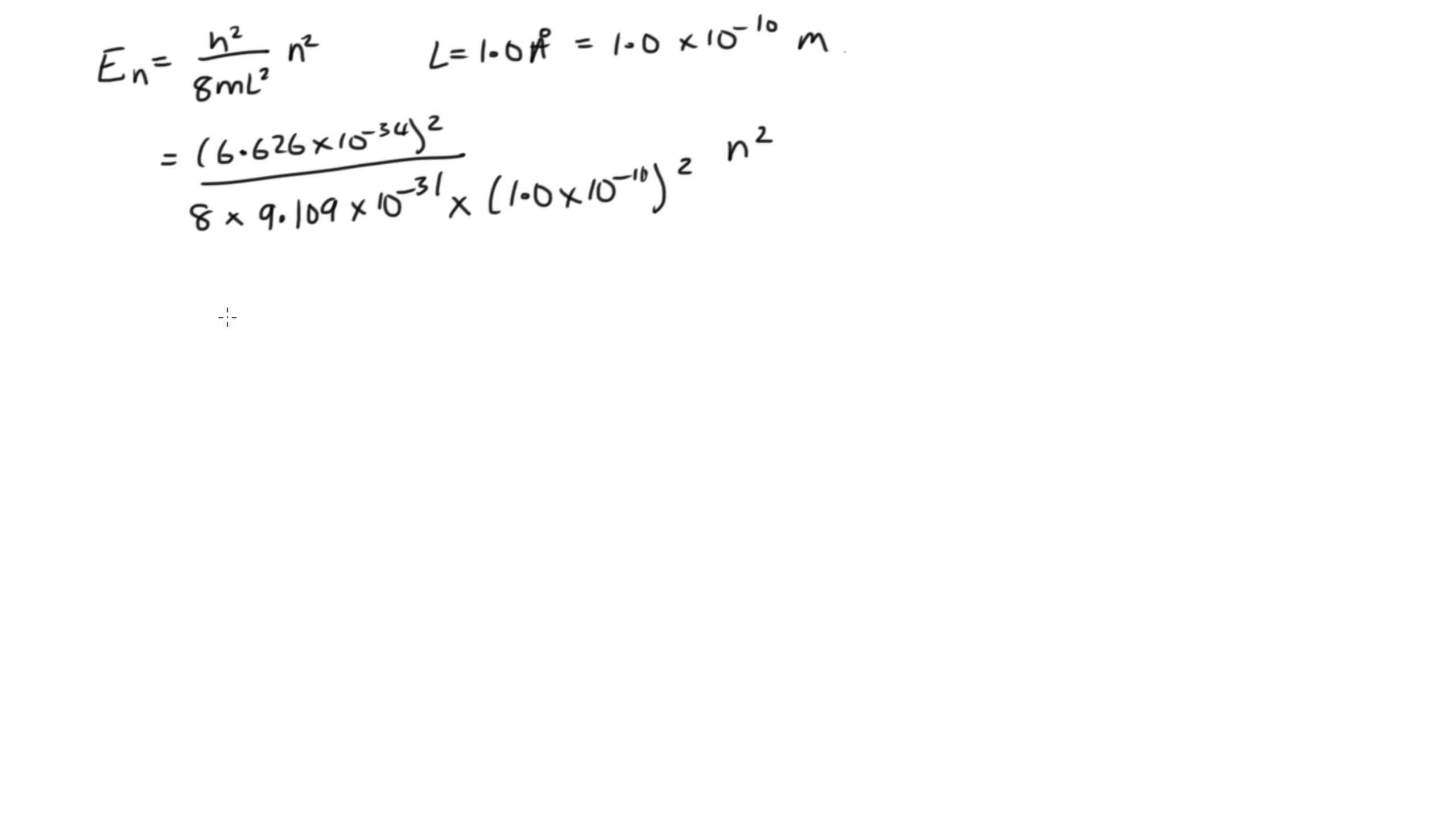And then that's n squared. So solving this on the calculator, we end up with 6.02 times 10 to the minus 18 n squared.